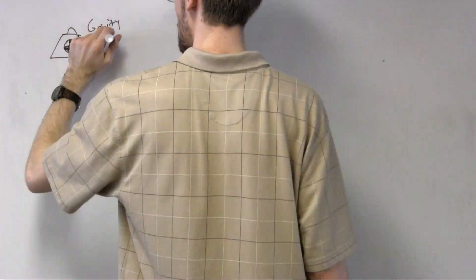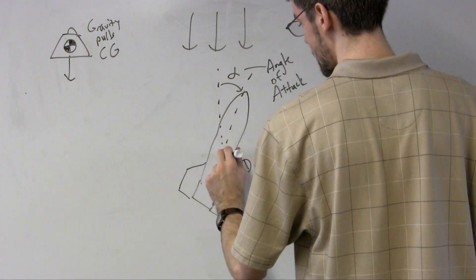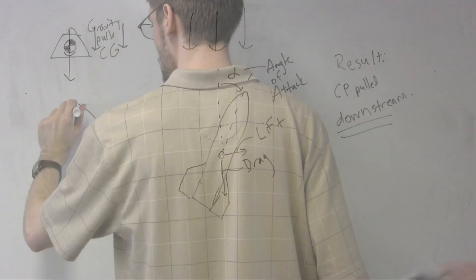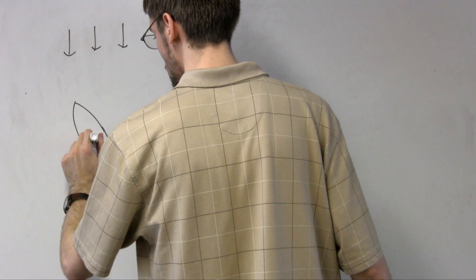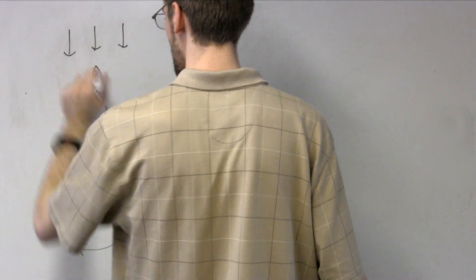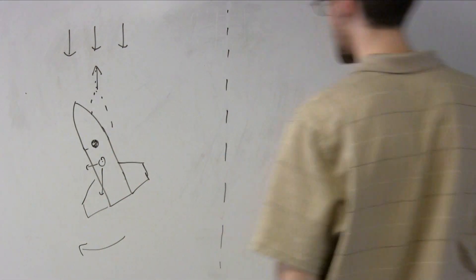Much as gravity forces pull the CG down, pressure forces act to pull the CP along the direction of airflow. Because a body in free space will rotate about its center of gravity, if the CP starts out behind the CG, the pressure forces will push the rocket back into line if it gets tilted slightly.